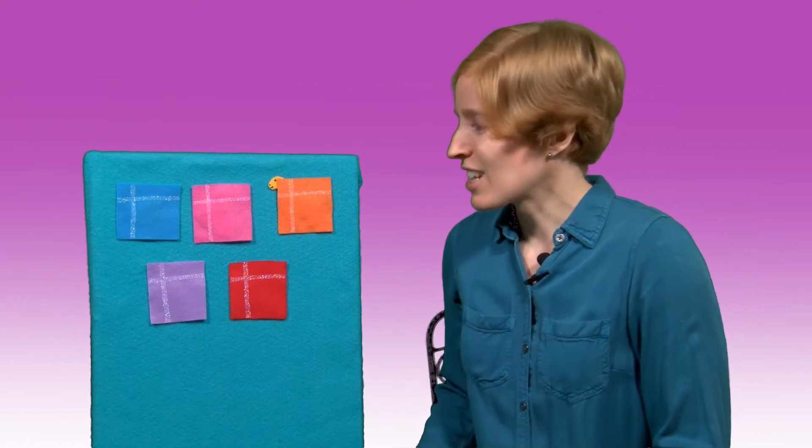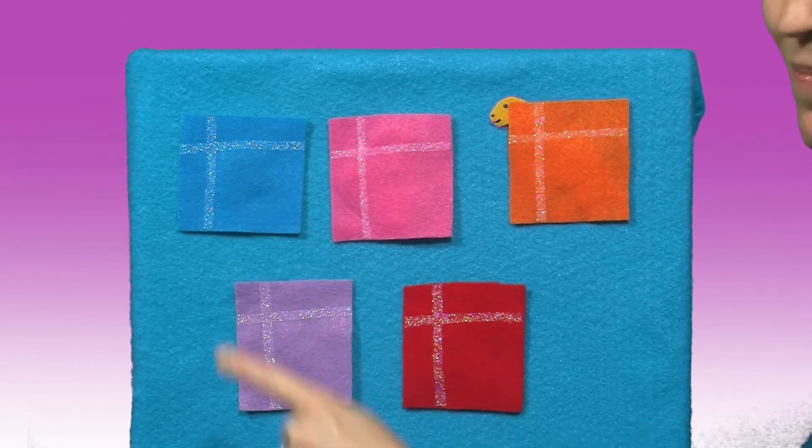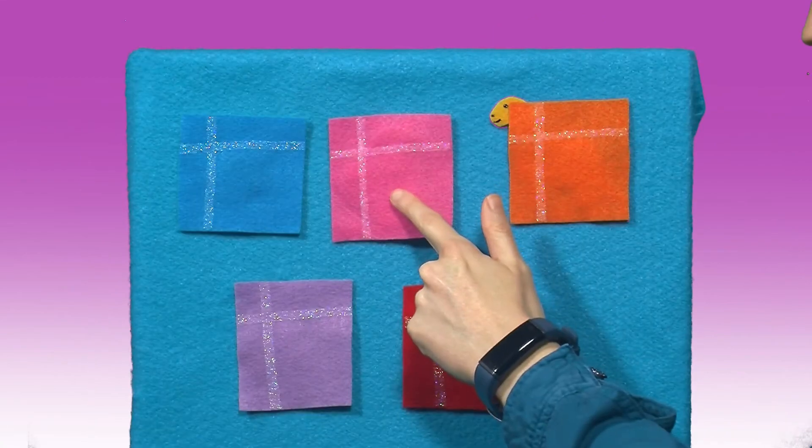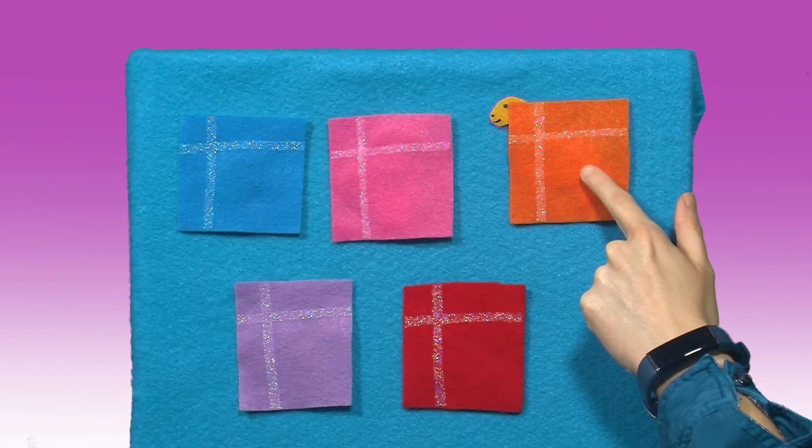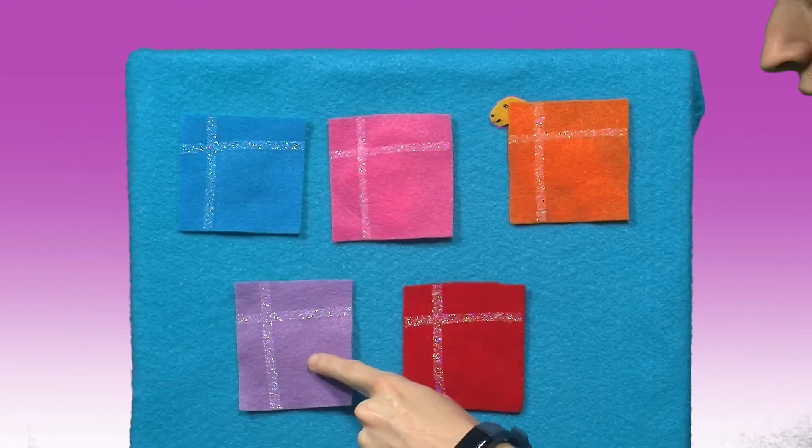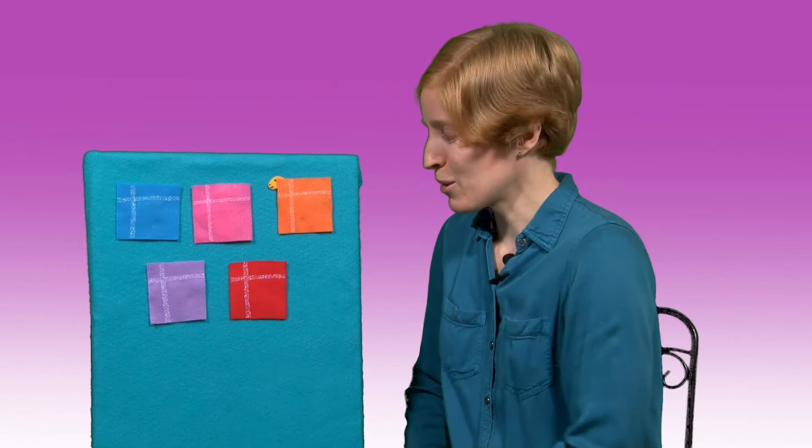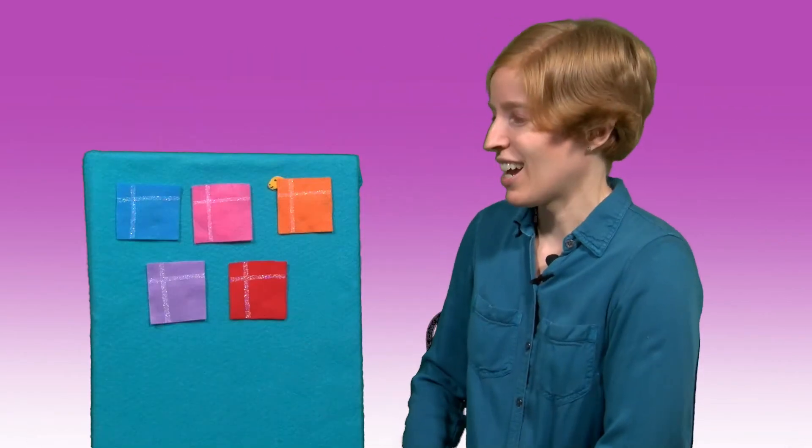So let's see what color boxes do we have here. What about this one? Orange. This box? Purple. And this one? Red.